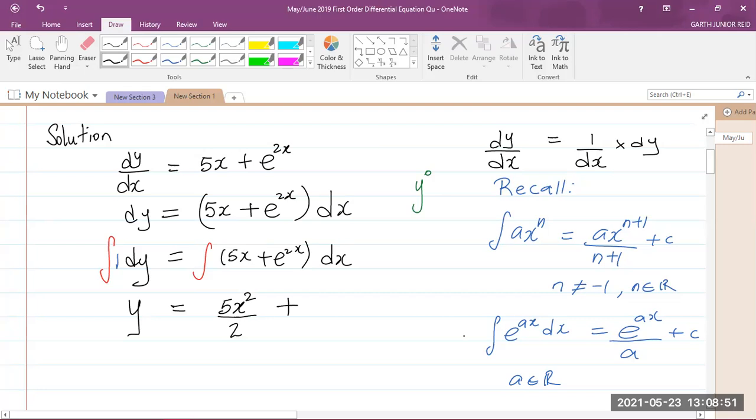Plus, if I want to integrate e to the power 2x following this rule here, I will get e to the power 2x divided by the derivative of the power 2x, which is 2, plus my arbitrary constant of integration c.